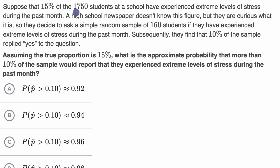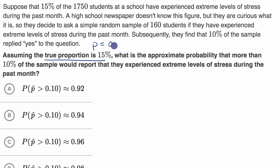We're told that 15% of the 1,750 students at a school have experienced extreme levels of stress during the past month. A high school newspaper doesn't know this figure, but they are curious what it is. So they decide to ask a simple random sample of 160 students if they have experienced extreme levels of stress during the past month. They find that 10% of the sample replied yes. What is the approximate probability that more than 10% of the sample would report that they experienced extreme levels of stress during the past month?